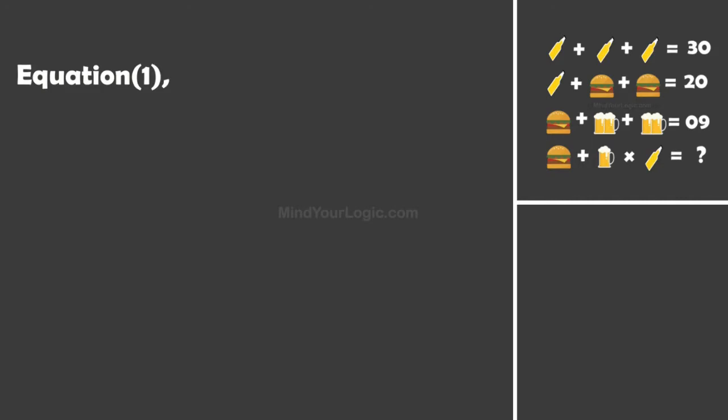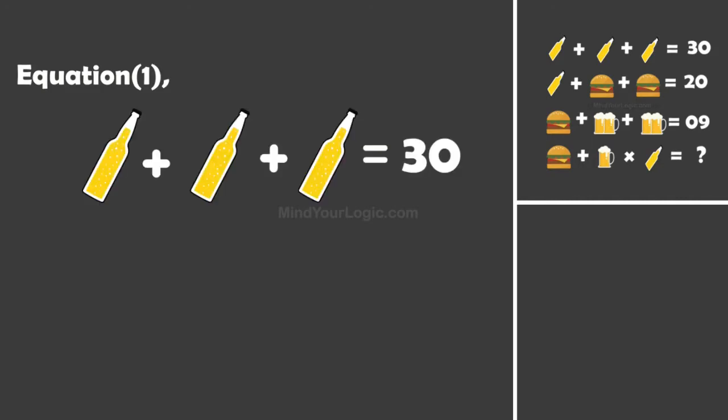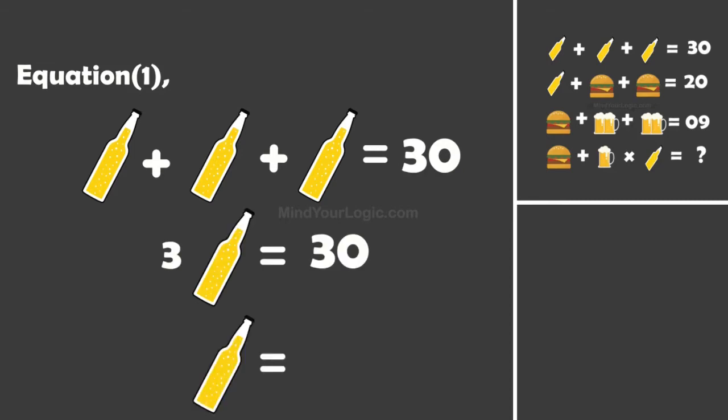Initiating with equation 1: Bottle plus Bottle plus Bottle equals 30. On simplifying, we get Bottle equals 10.